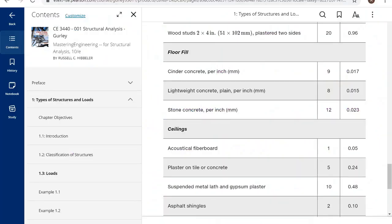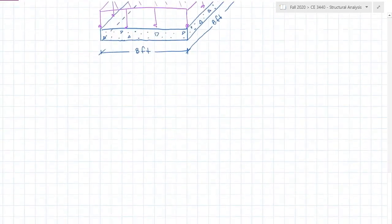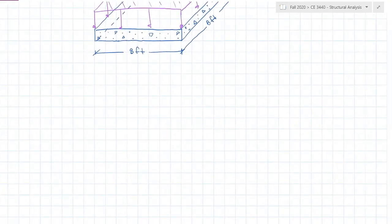Our dead load is still going to come from table 1.3 in our textbook. Here we are at the same table, but instead of the lightweight concrete like the previous example, we're going to be using stone concrete which is a little bit heavier at 12 pounds per square foot per inch depth.